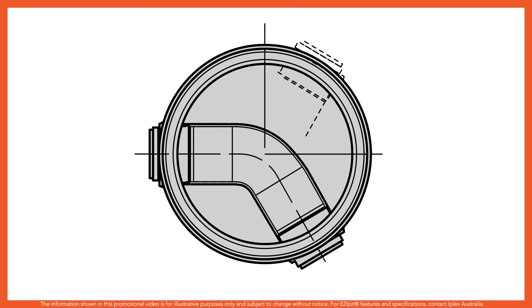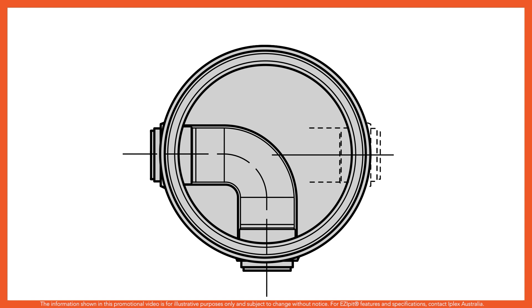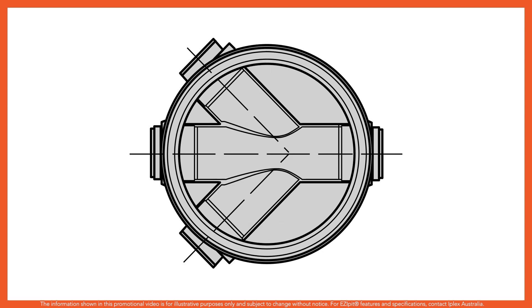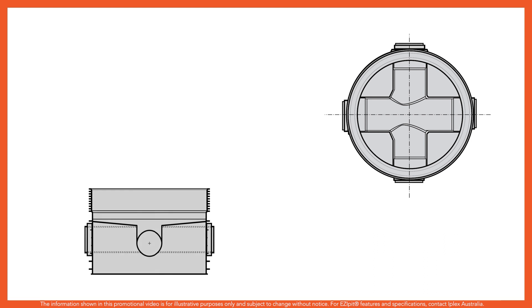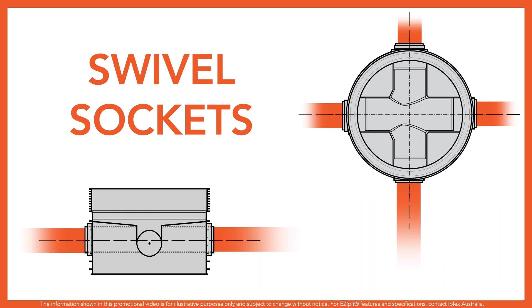With a wide range of base flow channel configurations, the EasyPit allows flexibility for designers and installers. The EasyPit base technology also includes swivel sockets, which allow the pipe grade or angle to be adjusted up to 7.5 degrees in any direction, providing the installer with flexibility in the trench.